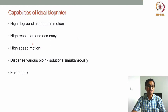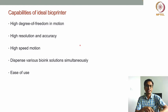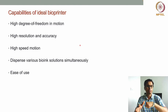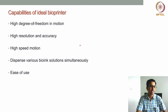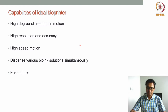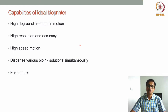Another requirement is high resolution and accuracy. If I want to accurately print a tissue structure mimicking the native architecture or native microstructure, I need high accuracy and high resolution so that very fine details of a particular tissue construct can be printed. Some printers like inkjet-based and laser-assisted bioprinting offer high resolution and high speed.